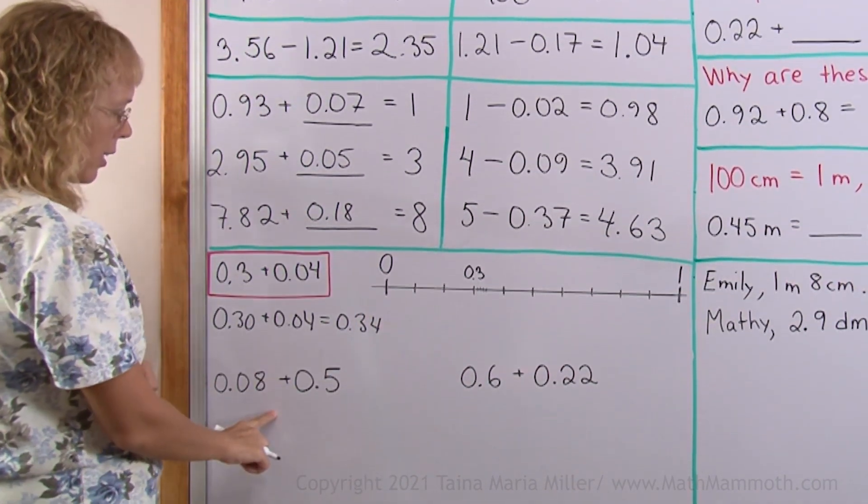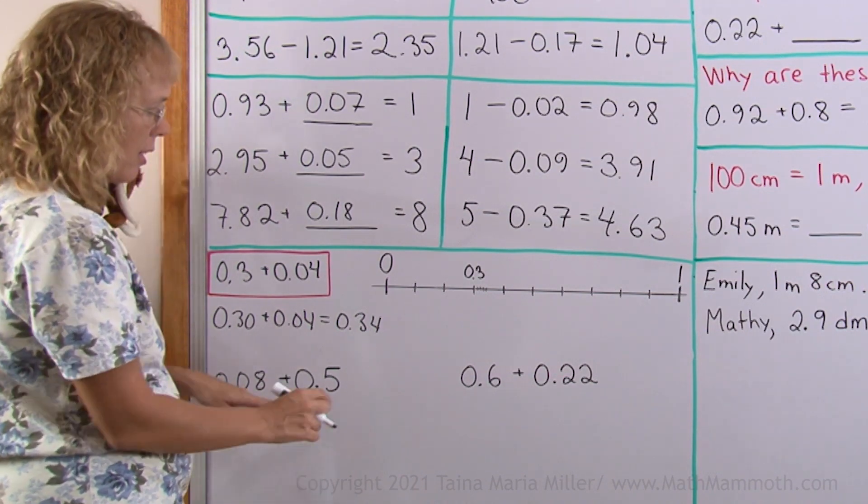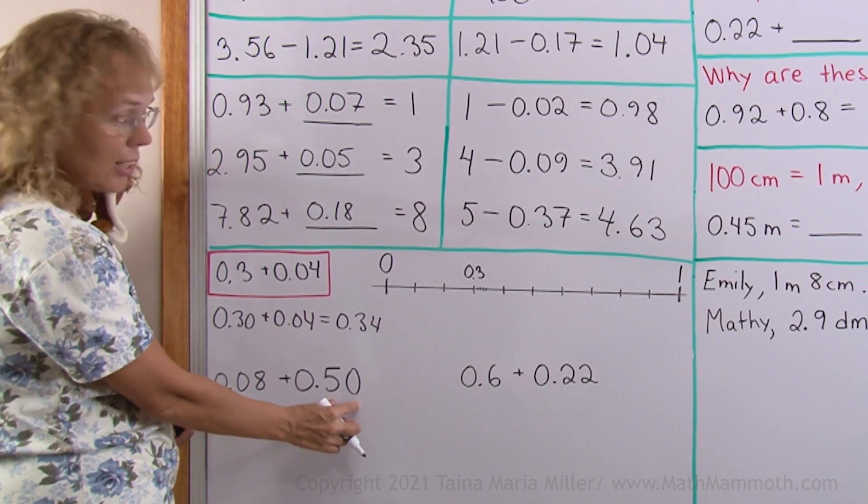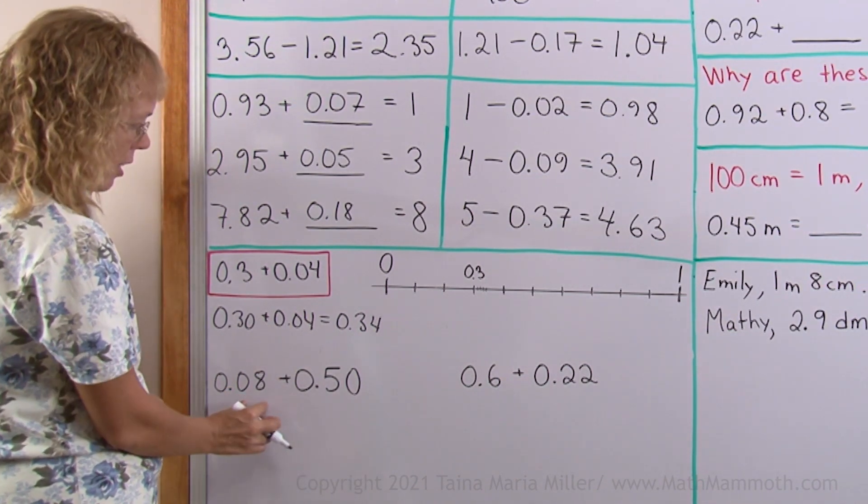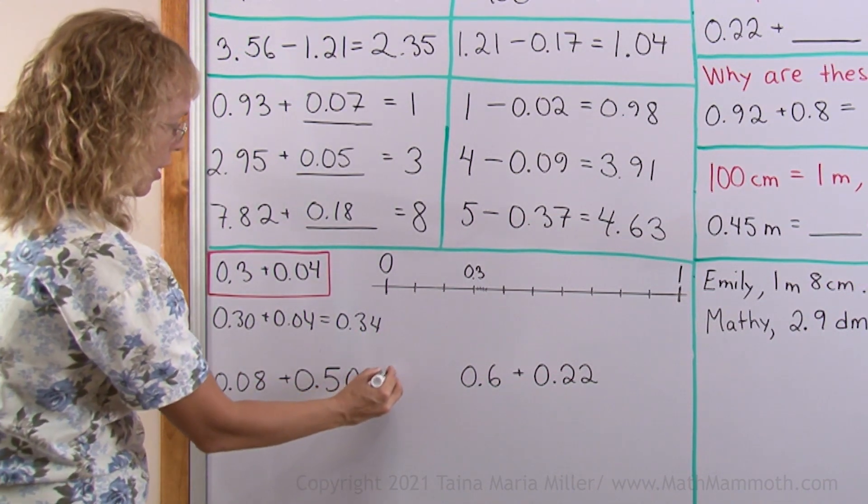Let's use the same trick here. So that when we have 8 hundredths and 5 tenths, I will tag a 0 here. So that this also has 2 decimal digits now, it is 50 hundredths, and here's 8 hundredths. A total of 58 hundredths. So that's very easy now.